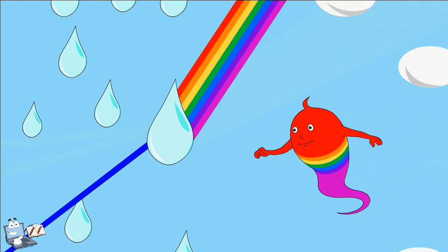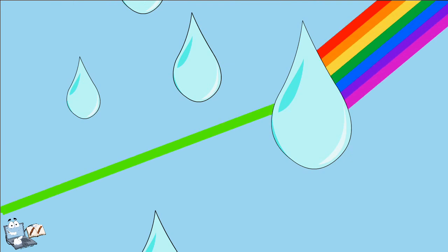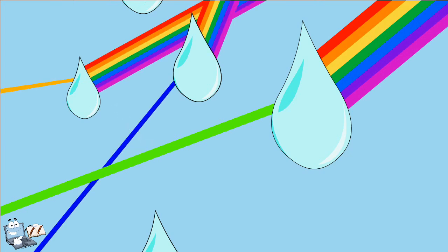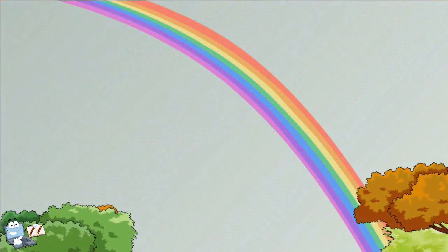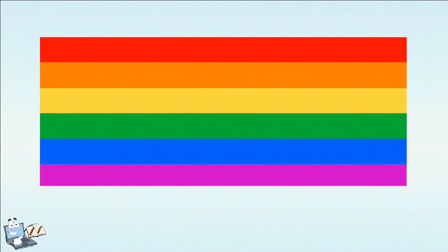The angle for each color of a rainbow is different because the colors slow down at different speeds when they enter the raindrop. The light exits the raindrop in one color depending on the angle it came in, so we only see one color coming from each raindrop. Light at different angles coming through many raindrops forms the rainbow that we see in stripes of red, orange, yellow, green, blue, indigo, and violet.